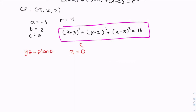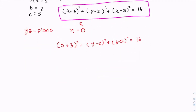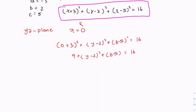When x equals 0, we have 0 plus 3 squared plus y minus 2 squared plus z minus 5 squared equals 16. That gives us 9, and subtracting 9 from both sides, we have y minus 2 squared plus z minus 5 squared equals 7. This is the intersection on the yz plane.